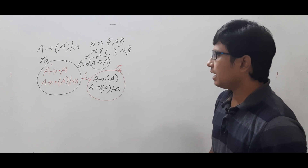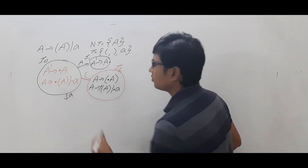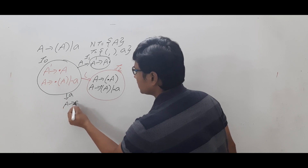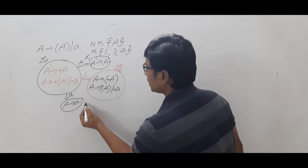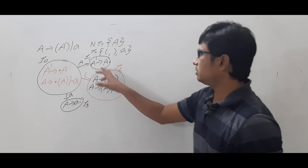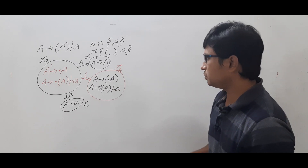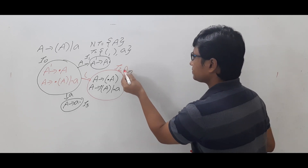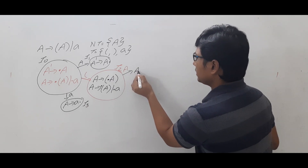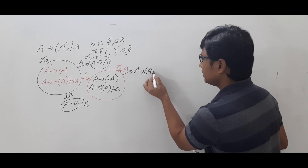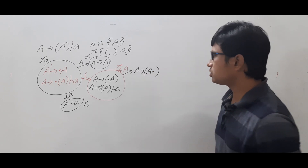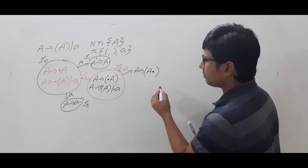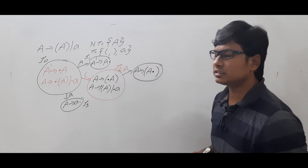From I2, on capital A, we get A → (A•). This is item number I3 — it is a reduced item, so we need not compute further. From I2, on small 'a', we get A → a•, which is item number I3. Wait — on A from I2, we get A → (A•), which is item number I4. This is completed.